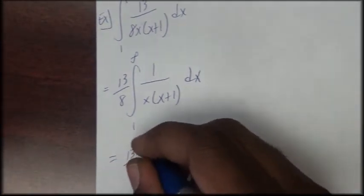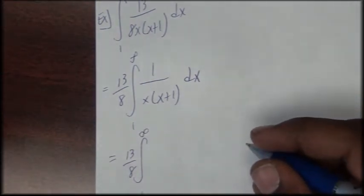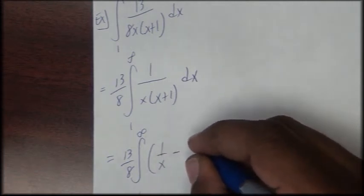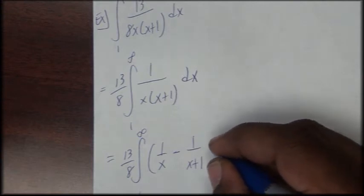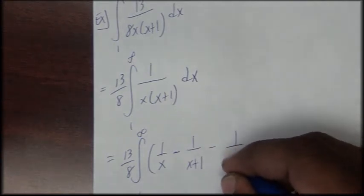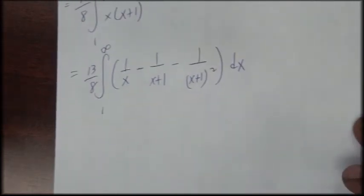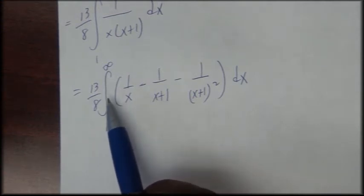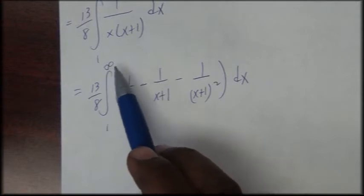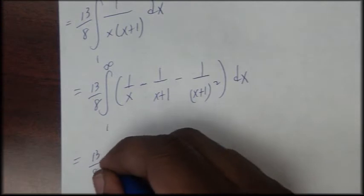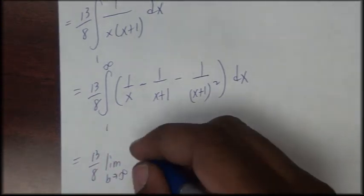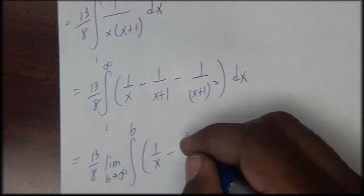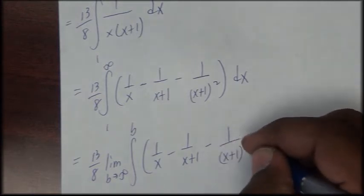So we have 13 over 8 times the integral from 1 to infinity for 1 over x minus 1 over (x plus 1) minus 1 over (x plus 1) squared dx. Since we have an infinite limit, I'll involve the limit as b approaches infinity and change our infinite limit. So we have 13 over 8 times the limit as b approaches infinity for the integral from 1 to b for the function 1 over x minus 1 over (x plus 1) minus 1 over (x plus 1) squared.